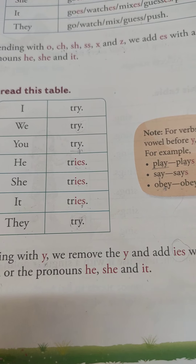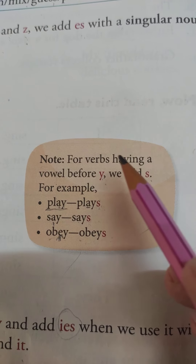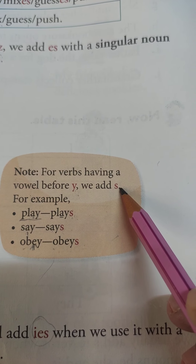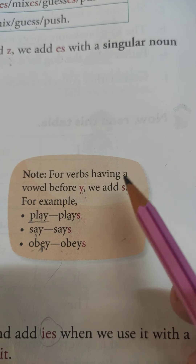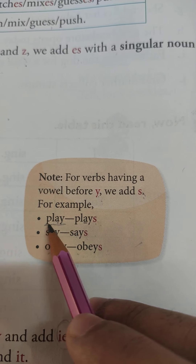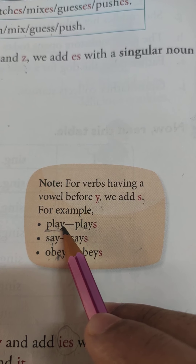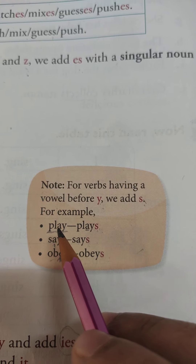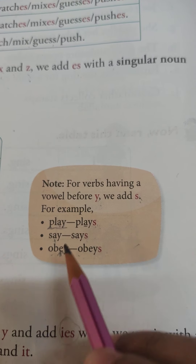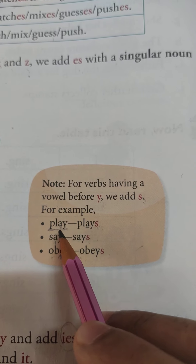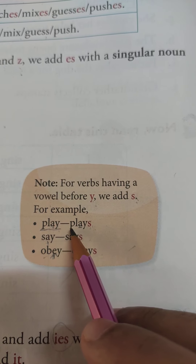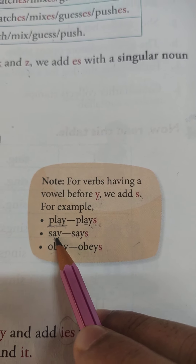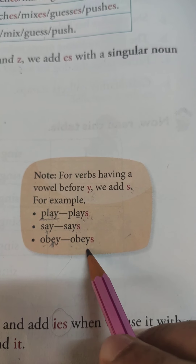There is one important note: for verbs having a vowel before y, we add 's' instead. Vowels are a, e, i, o, u. If a vowel comes before y, we add only 's'. For example: play → plays, say → says, obey → obeys.